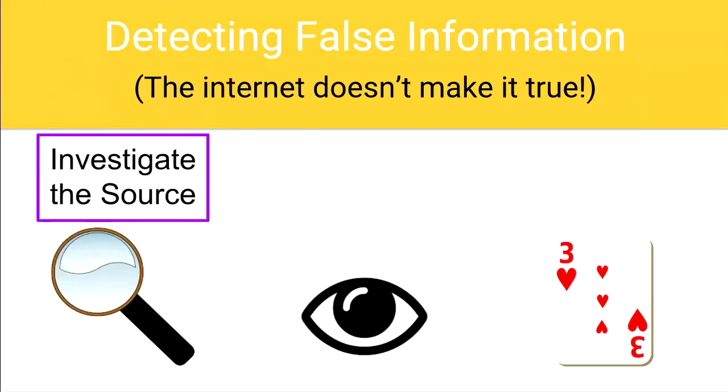The source of information will help you make a judgment about its reliability. Wikipedia, for example, is not a reliable source. Why? Because anyone has the ability to write it.